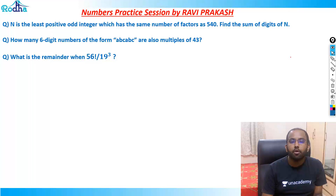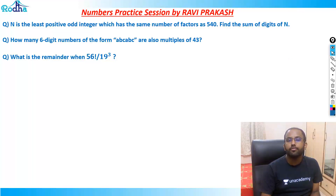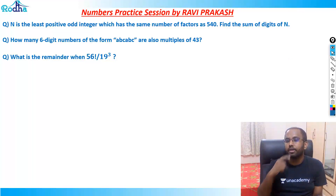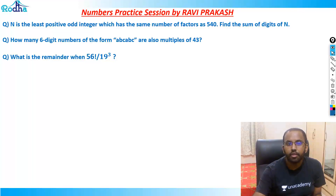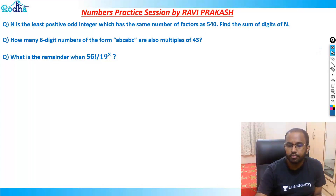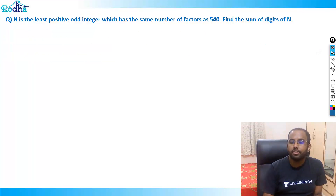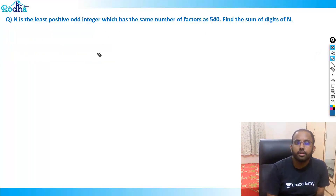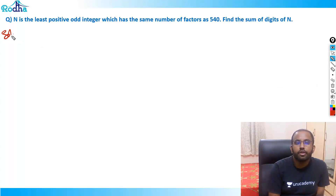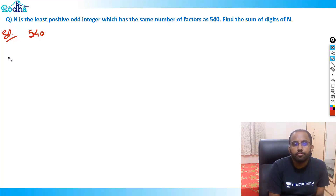The first question says: N is the least positive odd integer which has the same number of factors as 540. Find the sum of digits of N. So first let's find the number of factors of 540. We need to break 540 down into its prime factors.